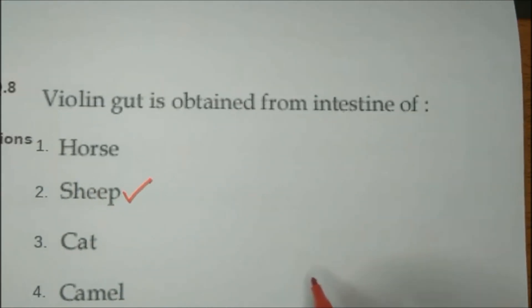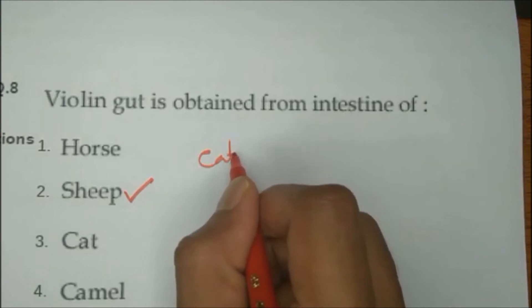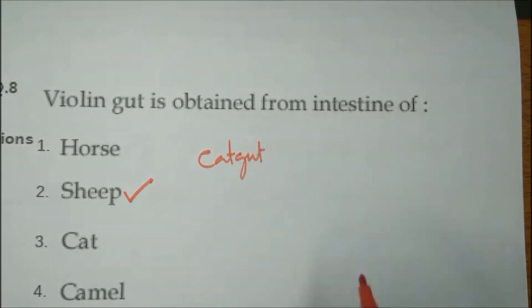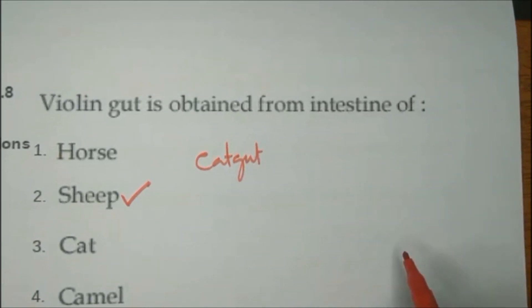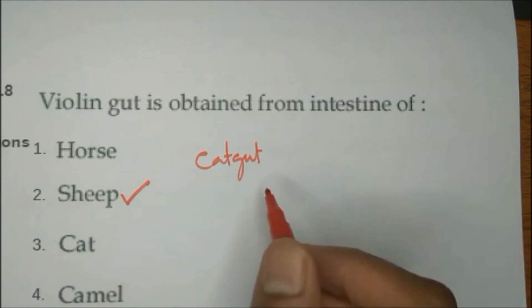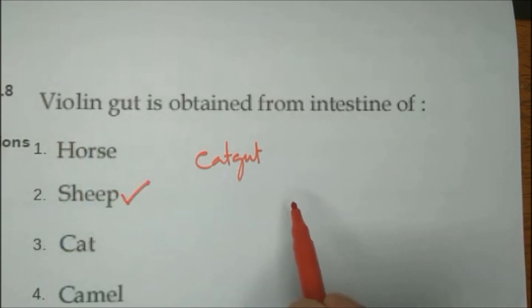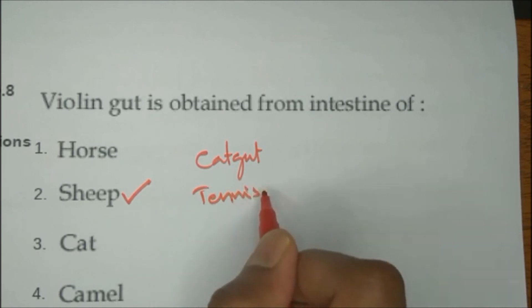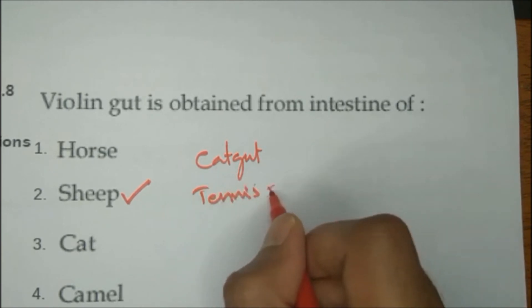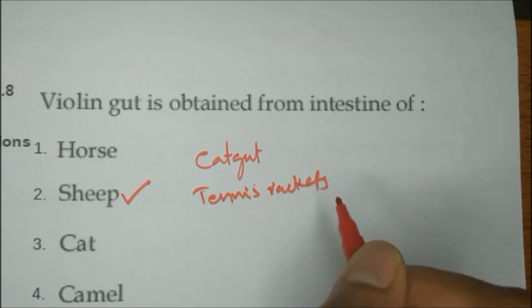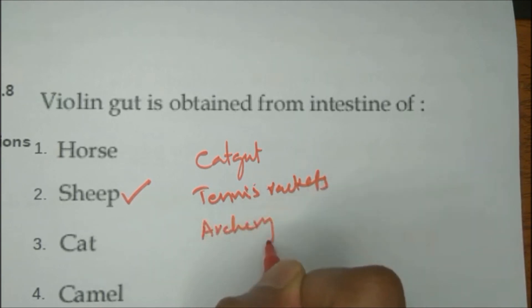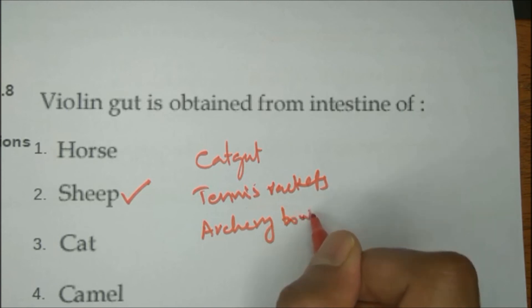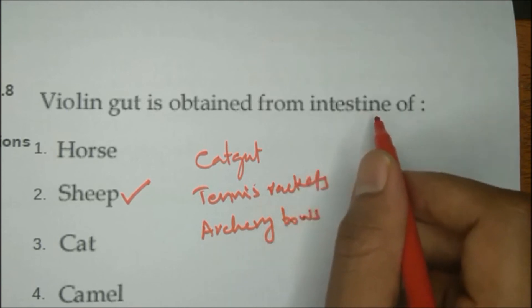Cat gut, used as sutures and surgical ligatures, is also obtained from sheep intestine. Similarly, strings for tennis rackets, archery bows, and violin gut are all prepared from sheep. So cat gut, tennis racket strings, archery bow strings, and violin gut — all are obtained from sheep.